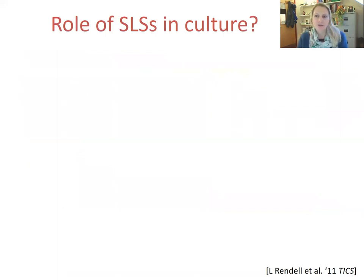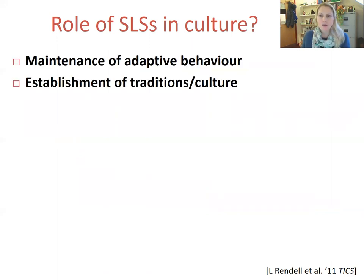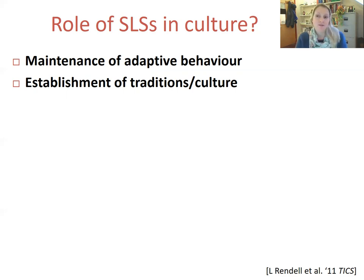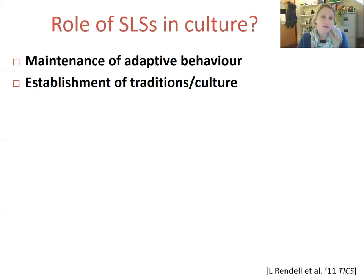To conclude the lecture on social learning strategies, let's consider what the role of social learning strategies or transmission biases might be in culture. Social learning strategies can be implicated in the maintenance of adaptive behaviour in populations — for example, what to eat or how to eat it. We've also discussed how social learning strategies are involved in the establishment of traditions and culture in animals — for example, different traditions for extractive foraging of resources in neighbouring communities, as in the Thai forest chimpanzees example.